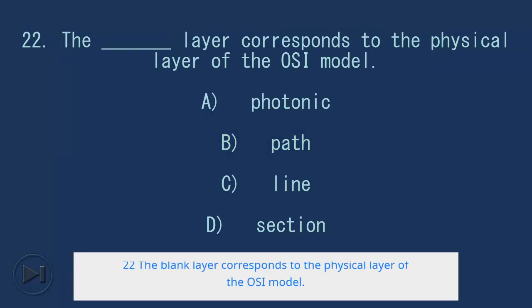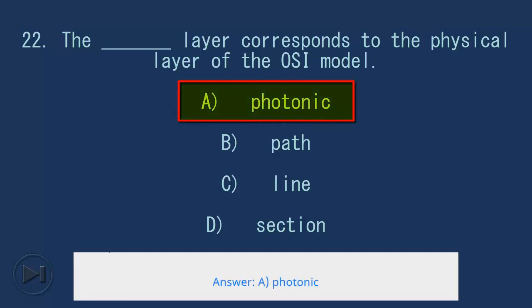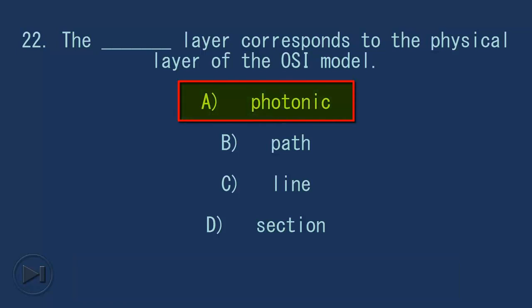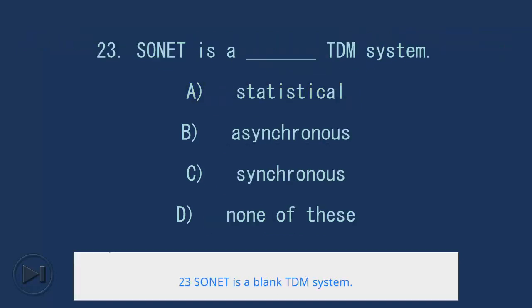22. The blank layer corresponds to the physical layer of the OSI model. A. Photonic, B. Path, C. Line, D. Section. Answer: A. Photonic.